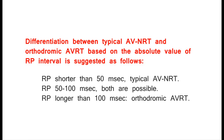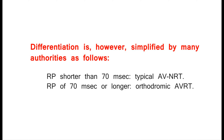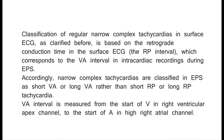Differentiation based on the absolute RP interval is suggested as follows: RP shorter than 50 ms — typical AVNRT; RP 50–100 ms — both are possible; RP longer than 100 ms — orthodromic AVRT. This is simplified by many authorities as: RP shorter than 70 ms — typical AVNRT; RP of 70 ms or longer — orthodromic AVRT. Classification of regular narrow complex tachycardias on surface ECG is based on the RP interval, which corresponds to the VA interval in intracardiac recordings during EPS.